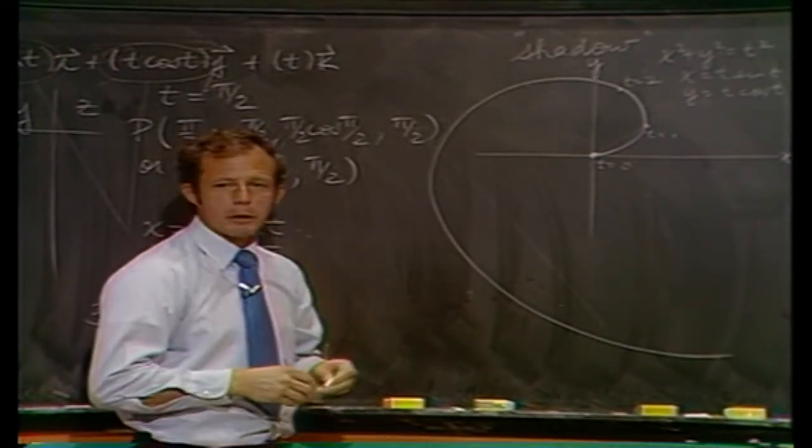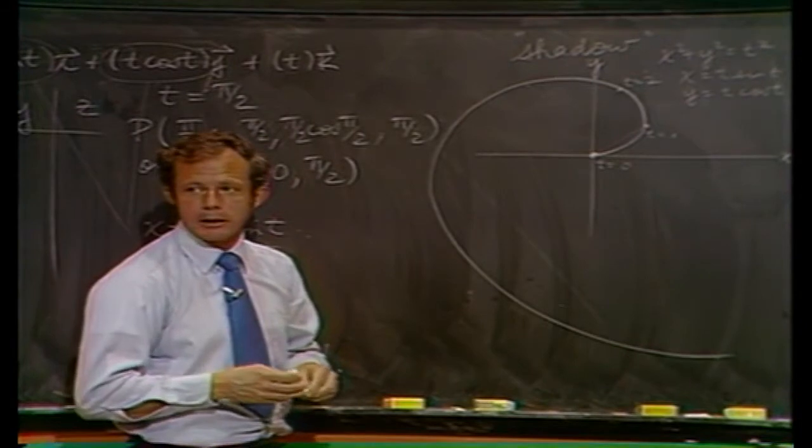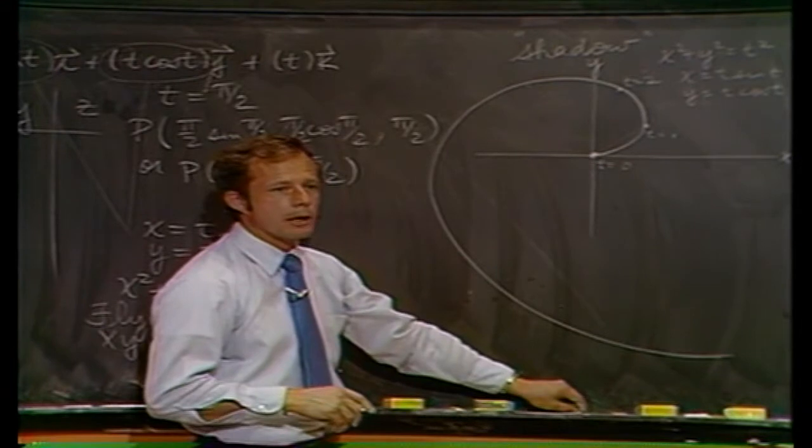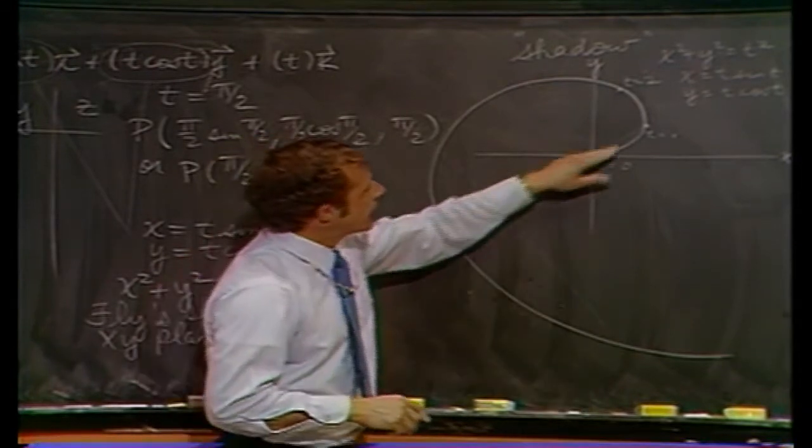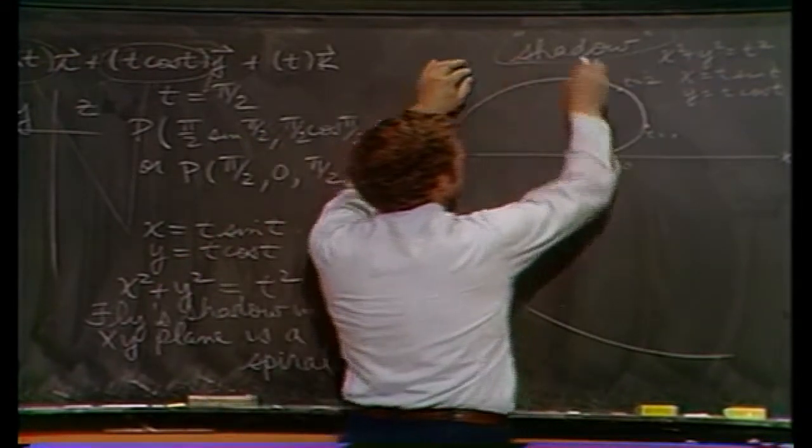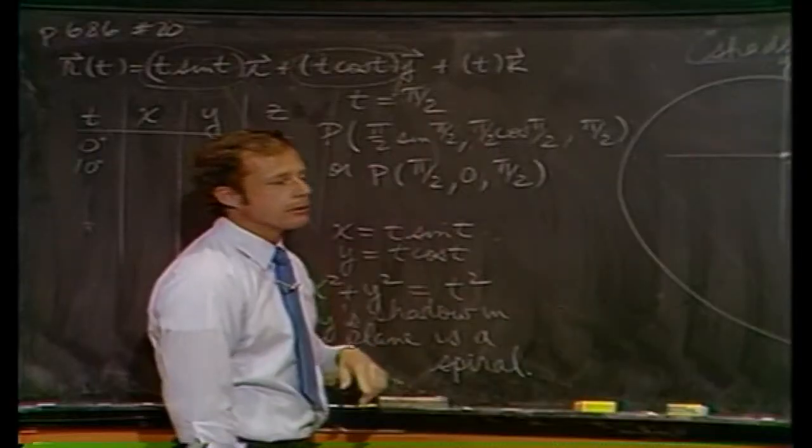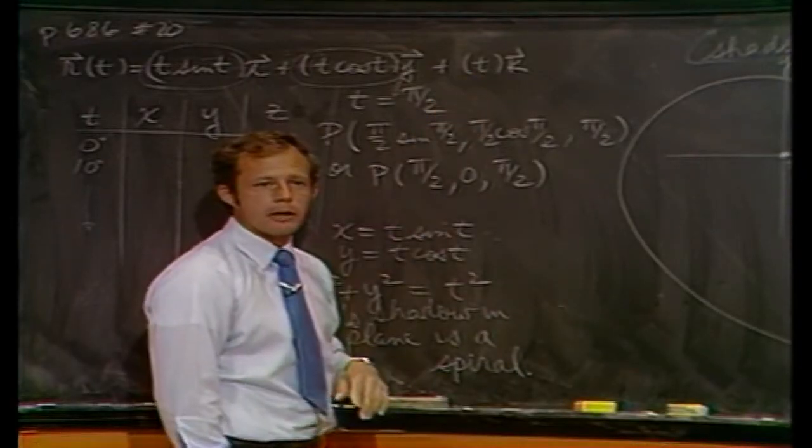Again, if we had more time, we could sit here with your calculators and plug in lots of numbers. But I feel if you do it, you'll find that this is basically what's going on. Now, this is the shadow, don't forget. What about the fly himself? Well, he or she is gaining altitude directly as a function of t by the function t itself.